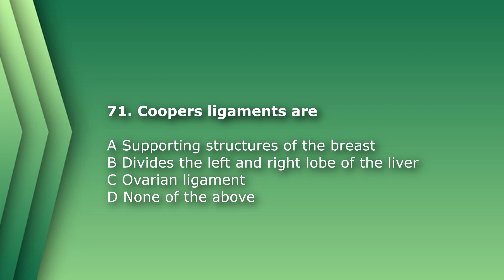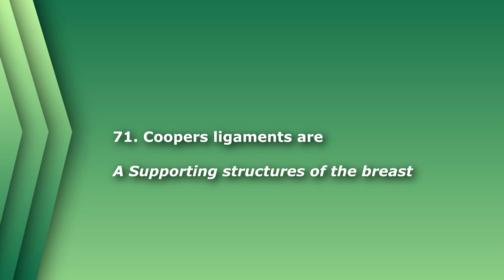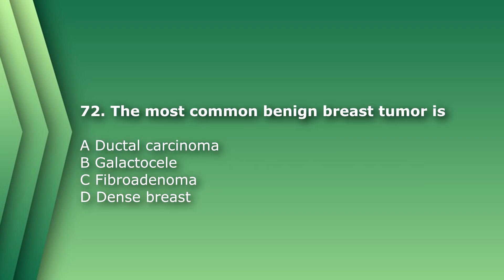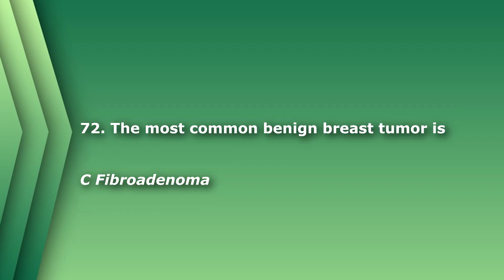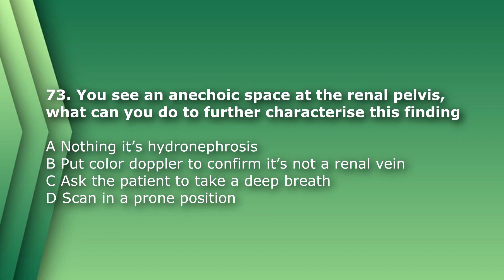Question 71: Cooper's ligaments are: A) supporting structures of the breast, B) dividers of the left and right lobe of the liver, C) ovarian ligament, D) none of the above. The answer is A, supporting structures of the breast. Question 72: The most common benign breast tumor is: A) ductal carcinoma, B) galactocele, C) fibroadenoma, D) dense breast. The answer is C, fibroadenoma.